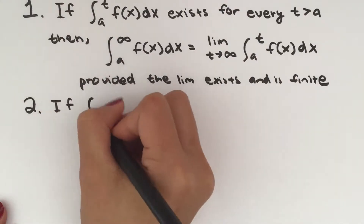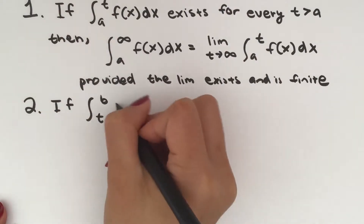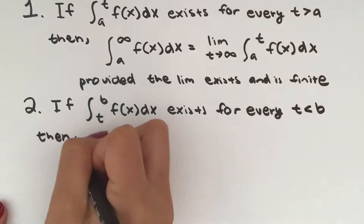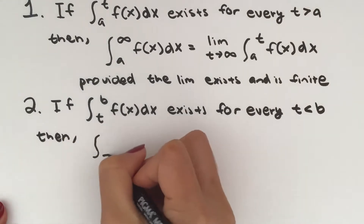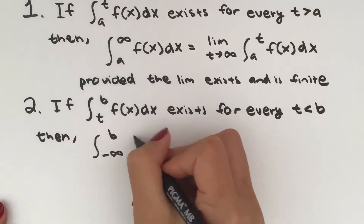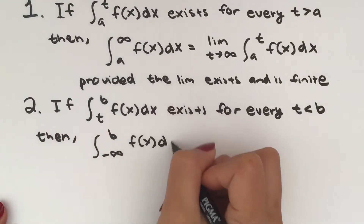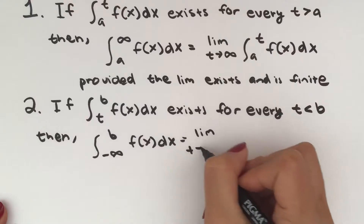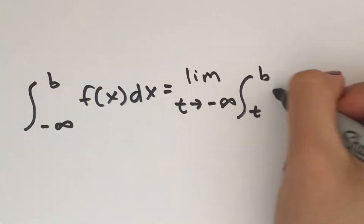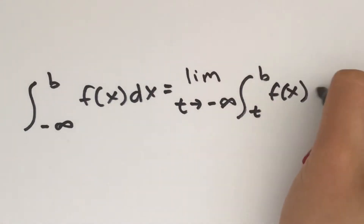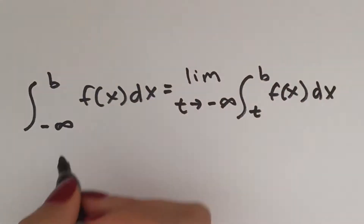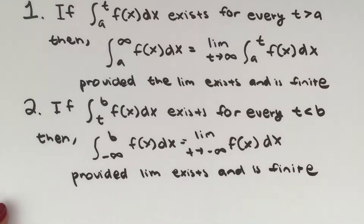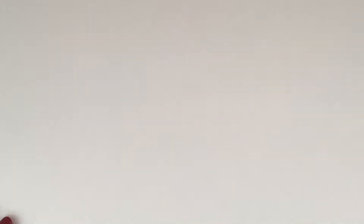The second case is that if the integral from t to b of f dx exists for every t less than b, then the integral from negative infinity to b of f dx equals the limit as t approaches negative infinity of the integral from t to b of f dx, provided that the limit exists and is finite.